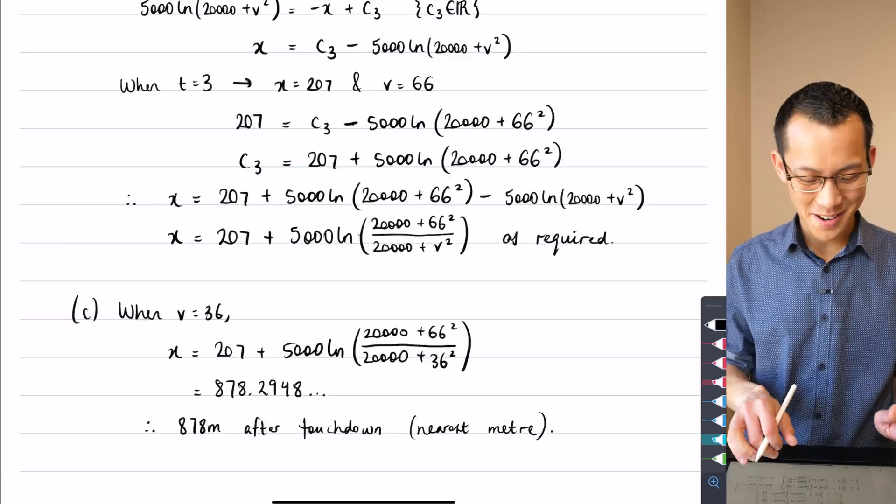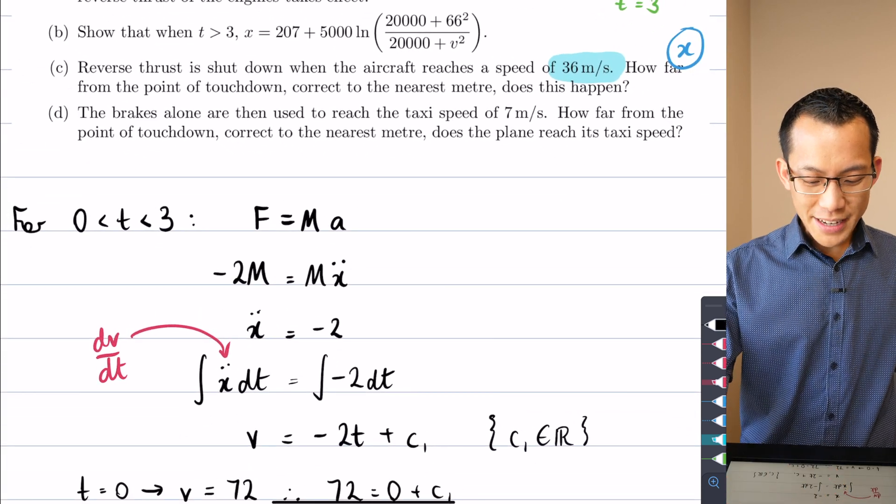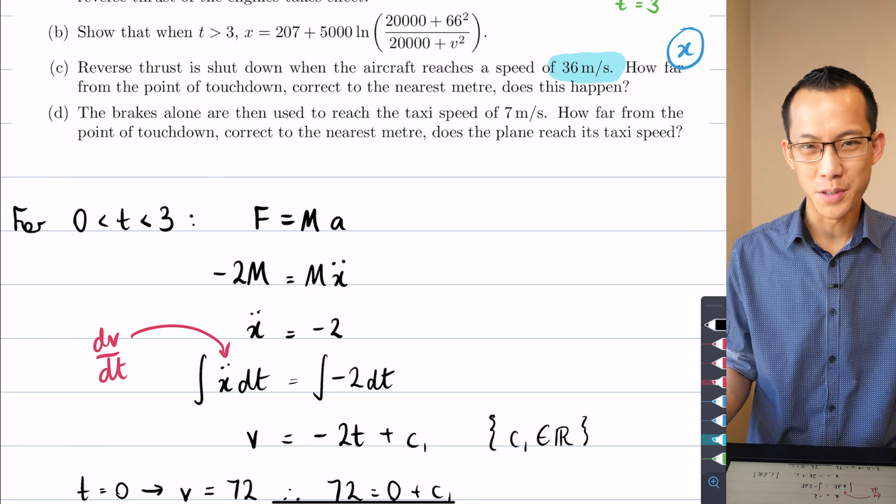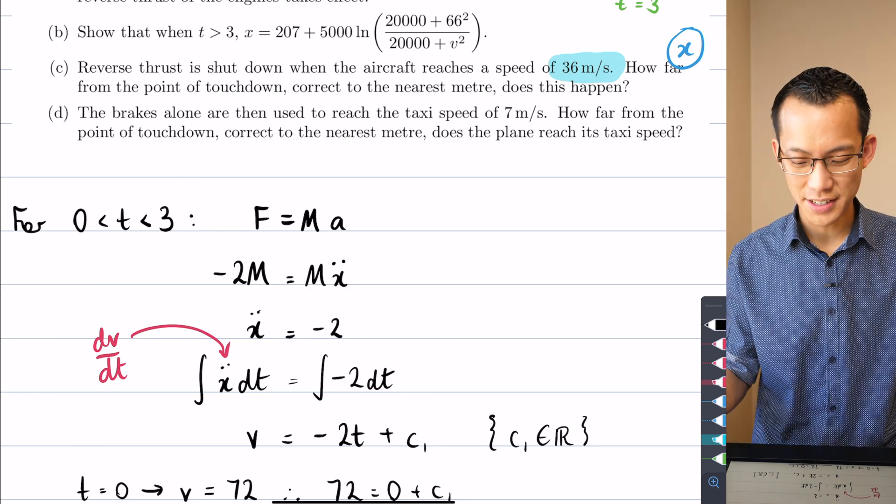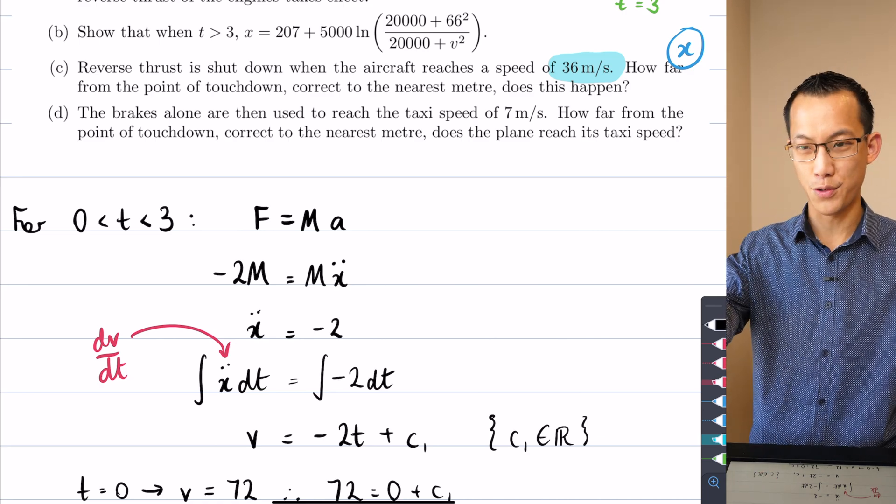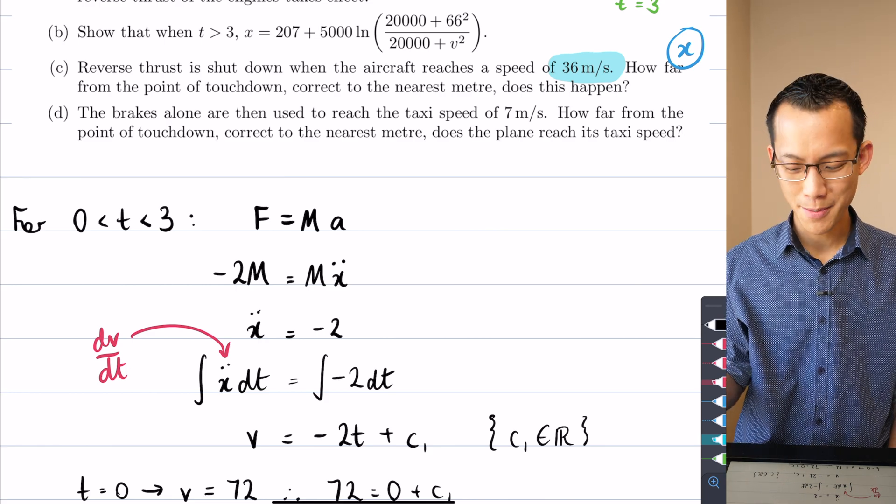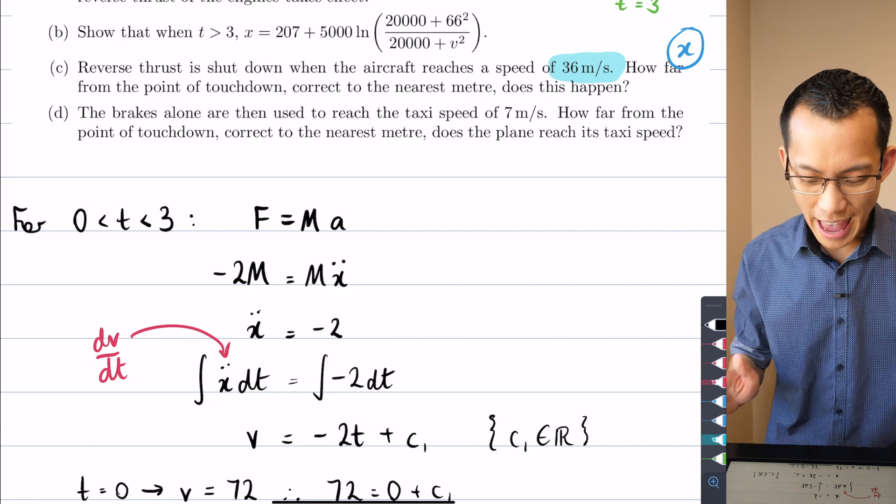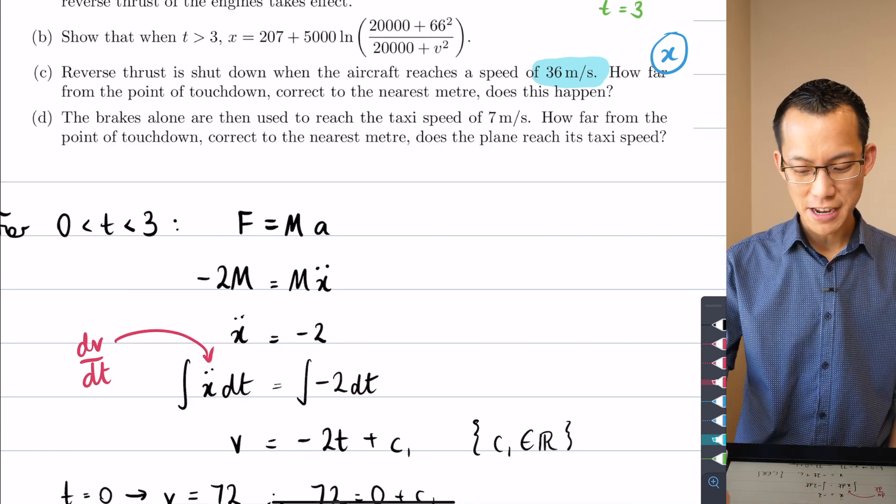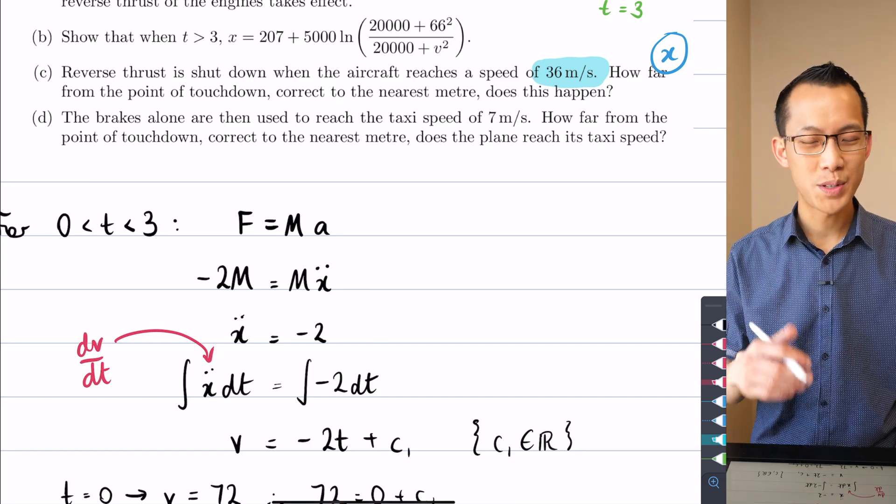So we're finally on the home stretch. Let's have a look at the final part of this question. The brakes alone are then used to reach the taxi speed of 7 meters. So if you're not sure what this is referring to, when the plane touches down, 7 meters per second apparently is the speed that it's happy to sort of just drive around the runways until it can get to the airport terminal and then disembark its passengers. How far from the point of touchdown, correct to the nearest meter, does the plane reach its taxi speed? So when do we get to velocity equals 7?